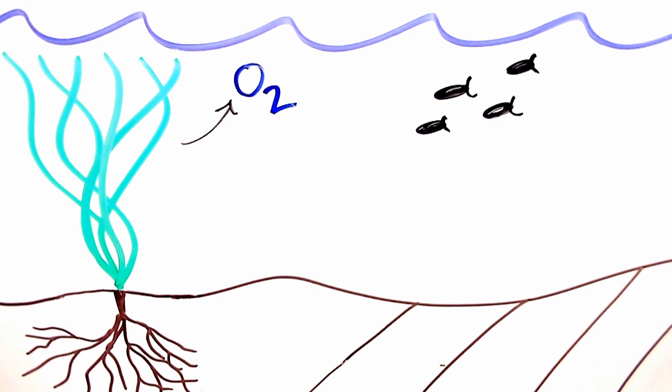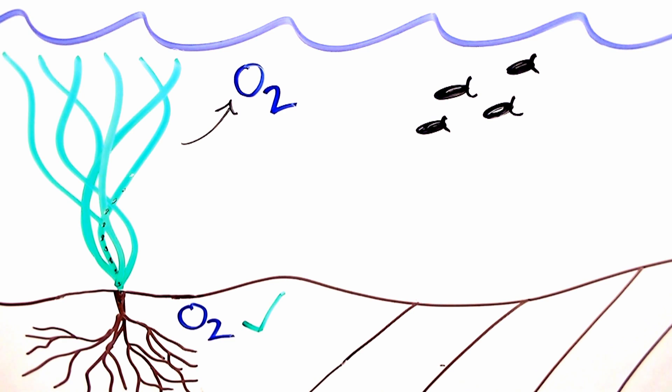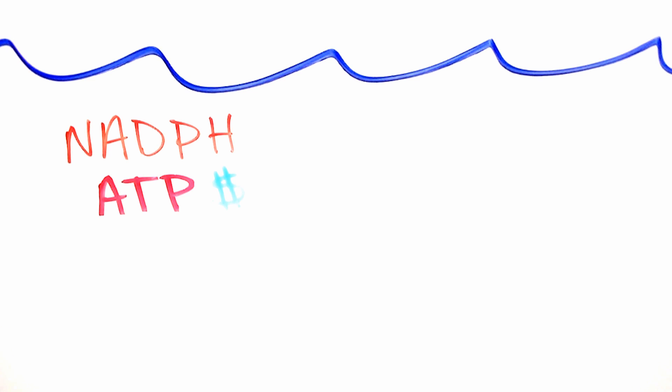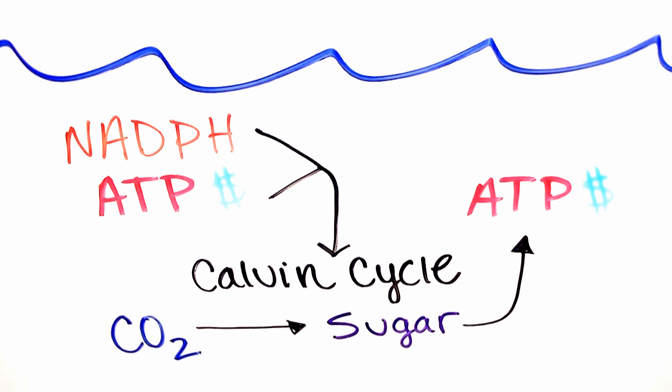The oxygen is released into the environment and is also shuttled down the plant to the roots where it is used to prevent necrosis that would otherwise take place in the anaerobic substrate. NADPH and ATP will be used by the plant in the Calvin cycle where CO2 is converted into sugars, which drives cellular respiration and even more ATP generation as well as carbon for assimilation. This allows the plant to grow and function the way we want in our aquarium.